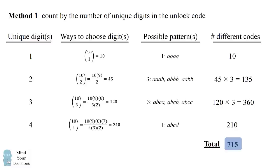There are a couple of observations to make. First, this is tremendously smaller than the 10,000 codes when we had ordered codes. Second, while this method does get to the correct answer, it involves many different steps — if you forget one of the possible patterns, you'll get the wrong answer. So while this method works, it is prone to miscalculation, and there are many steps where you can make an error.